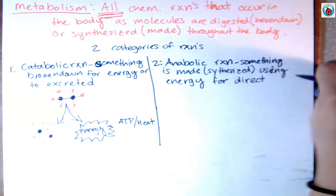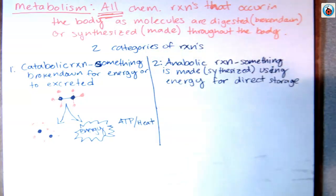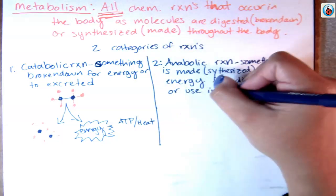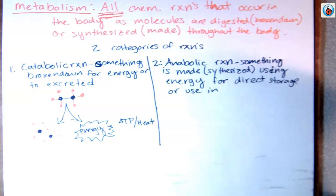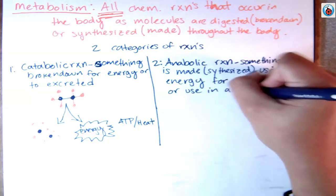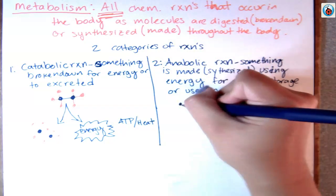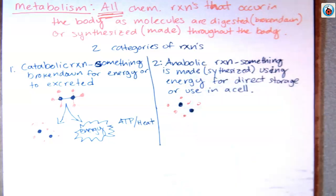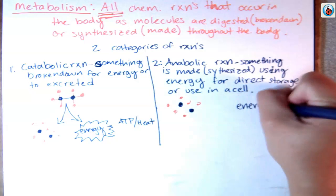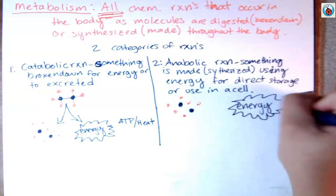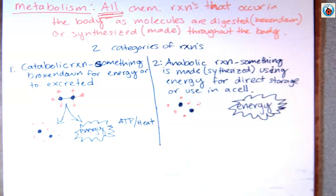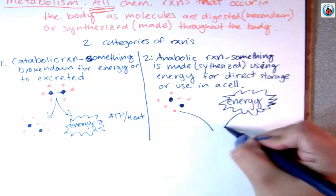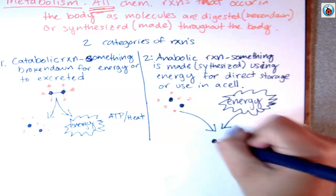You're building something that the cell is going to use, or building something that the cell is going to store for later. The energy currency in a cell is ATP — that's the type of energy you're going to be using. So this reaction goes in the opposite direction: you're putting something together from individual pieces.